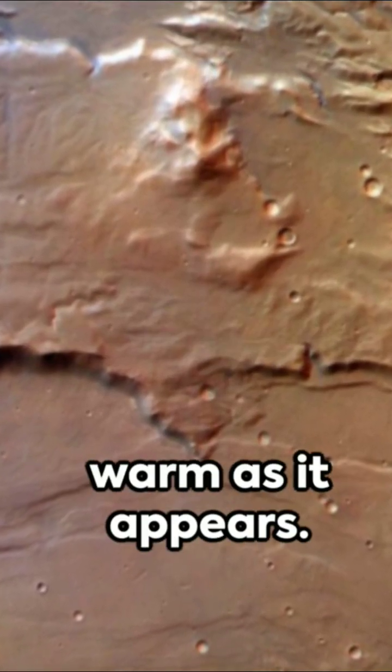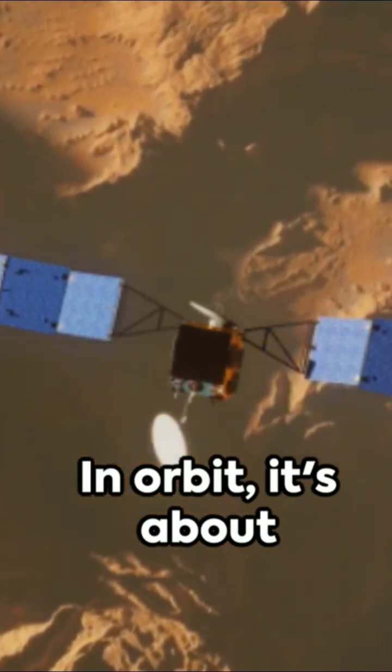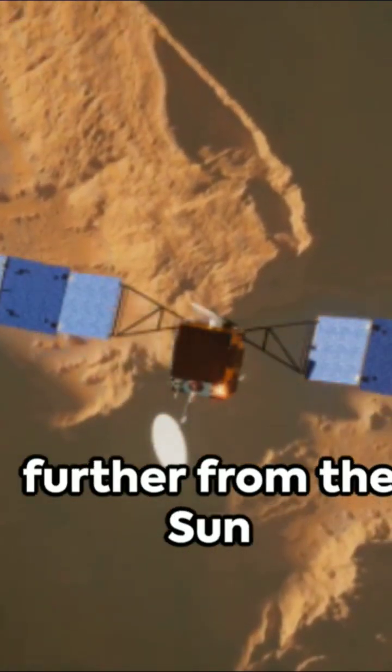Yet Mars is not as warm as it appears. In orbit, it's about 50 million miles further from the Sun than Earth, making it quite cold.